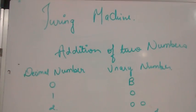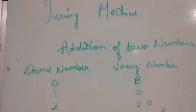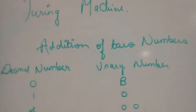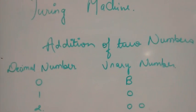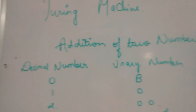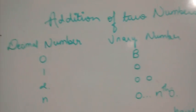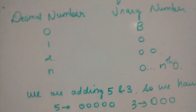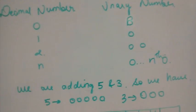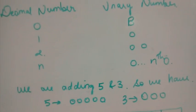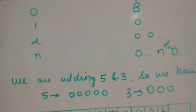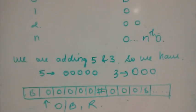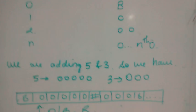Welcome to this tutorial on Turing machines. I'm going to show you how to add two numbers in a Turing machine. The decimal number zero is represented by blank space, one is represented by a single zero, two is represented by two zeros, and n is represented by n zeros. Today we are going to add five and three, so we have five zeros and three zeros.